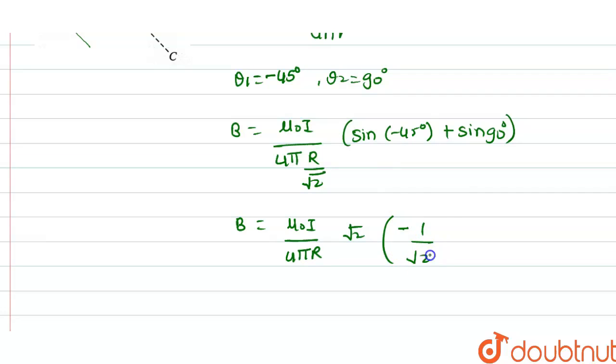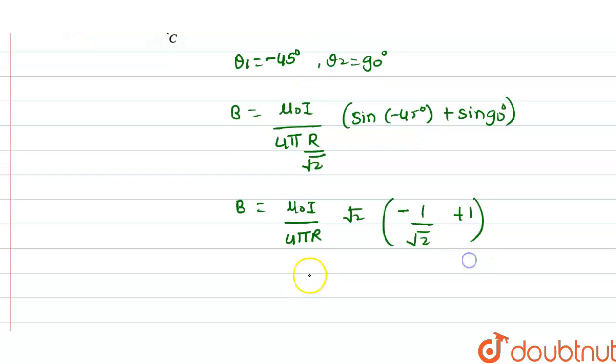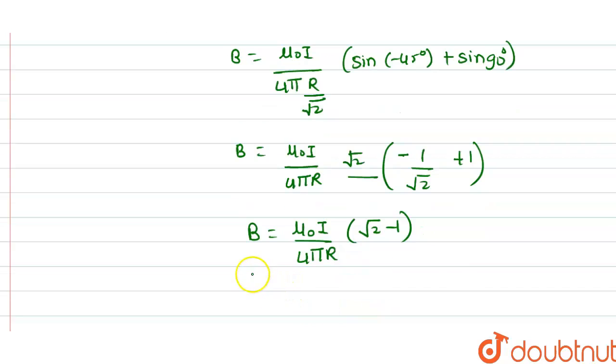minus of 1 by root 2 plus 1. So if we multiply by this root 2 in the bracket, B will be equal to mu naught i divided by 4 pi R into root 2 minus 1, and this is